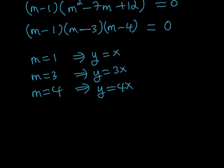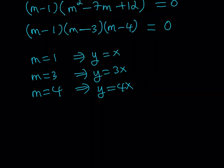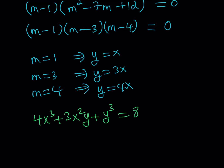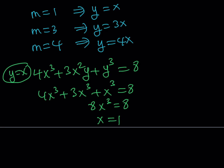We know the relationship between x and y. Let's use the first equation since everything is positive. For the y equals x case, substituting y with x into 4x cubed plus 3x squared y plus y cubed equals 8 gives 4x cubed plus 3x cubed plus x cubed equals 8, so 8x cubed equals 8, x cubed equals 1, and x equals 1. Since y equals x, y also equals 1. So (1, 1) is the first solution.